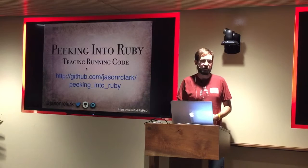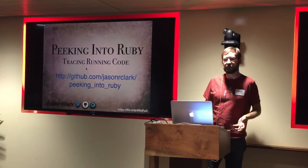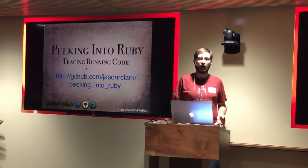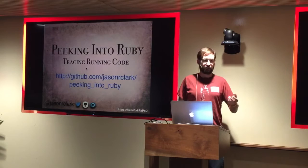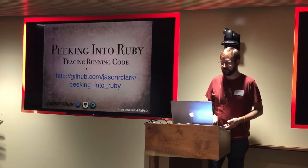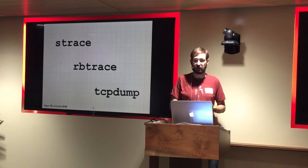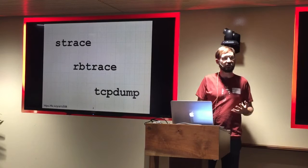The GitHub URL has a repo with a lot of different cases we're going to look at. This talk is going to be in a series of little mystery stories. Each mystery has a Docker container on that repo you can use, because some of these tools are a little fiddly to set up. So if you've ever wanted to play with them, you can pull that repo down. Three primary tools: strace, rbtrace, and tcpdump.